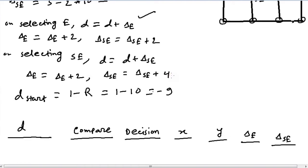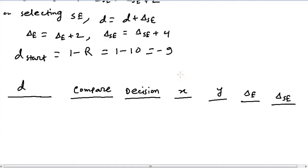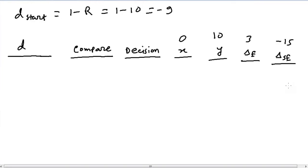And initially the d_start is 1 - r, which is 1 - 10 or -9. So our initial values are: x is 0, y is 10, del_e is 3, and del_se is -15.